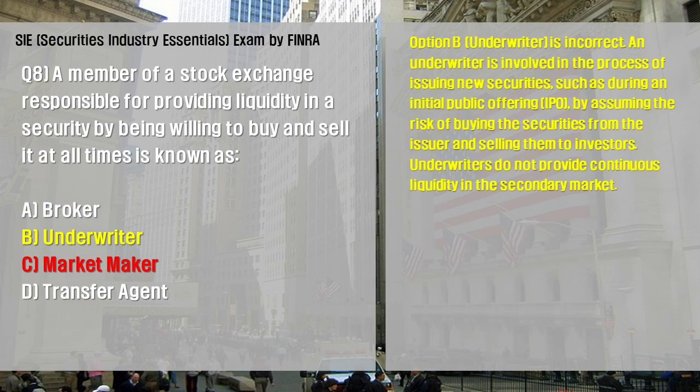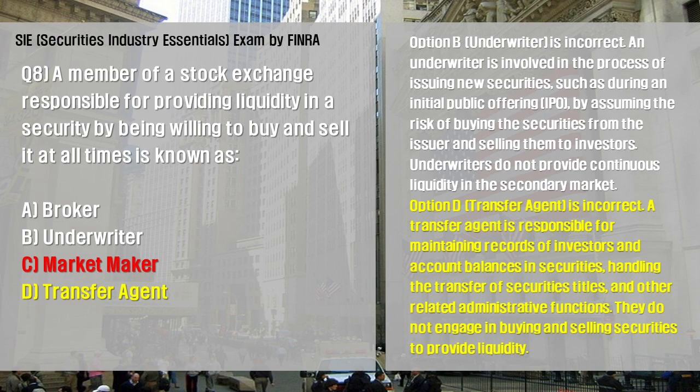Option B, underwriter, is incorrect. An underwriter is involved in the process of issuing new securities, such as during an initial public offering (IPO), by assuming the risk of buying the securities from the issuer and selling them to investors. Underwriters do not provide continuous liquidity in the secondary market. Option D, transfer agent, is incorrect. A transfer agent is responsible for maintaining records of investors and account balances in securities, handling the transfer of securities titles, and other related administrative functions; they do not engage in buying and selling securities to provide liquidity.